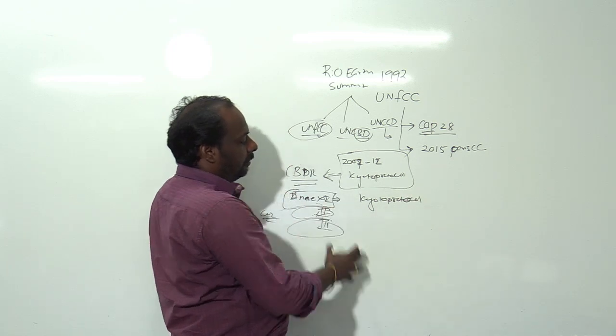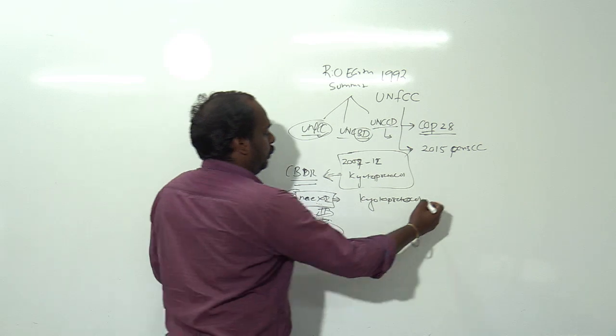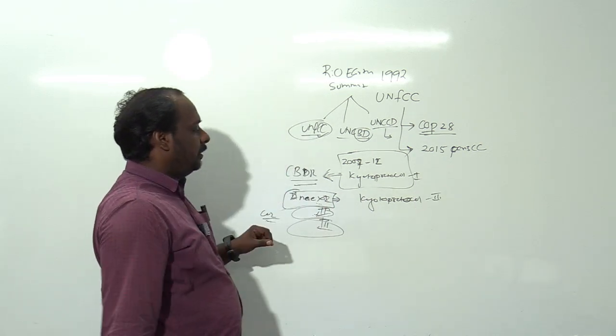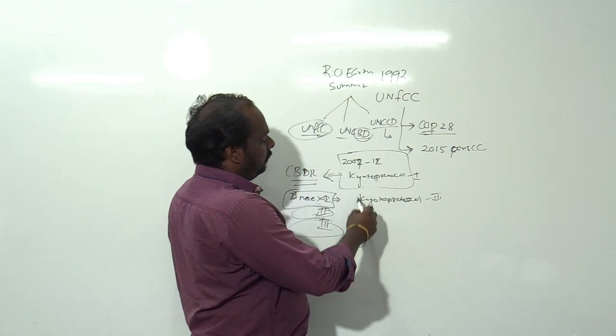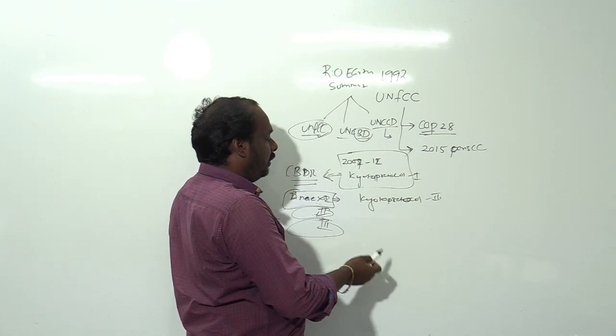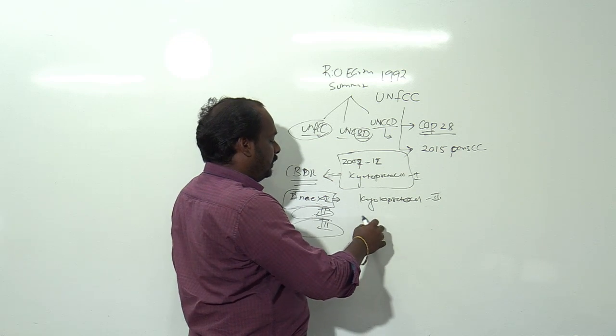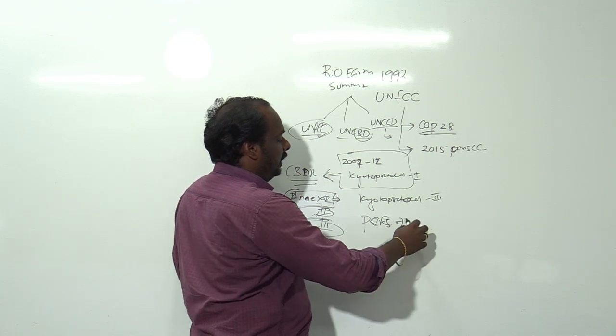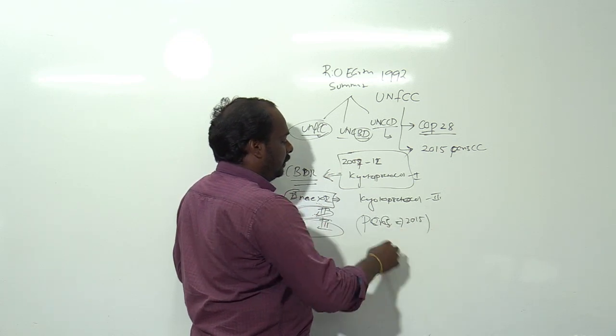The Kyoto Protocol came into existence in 2012. This is binding in nature for developed countries but voluntary for developing countries. We need to have a new one - that is called the Paris Climate Change Agreement. In Paris there was a Conference of Parties in 2015 when they made this agreement.